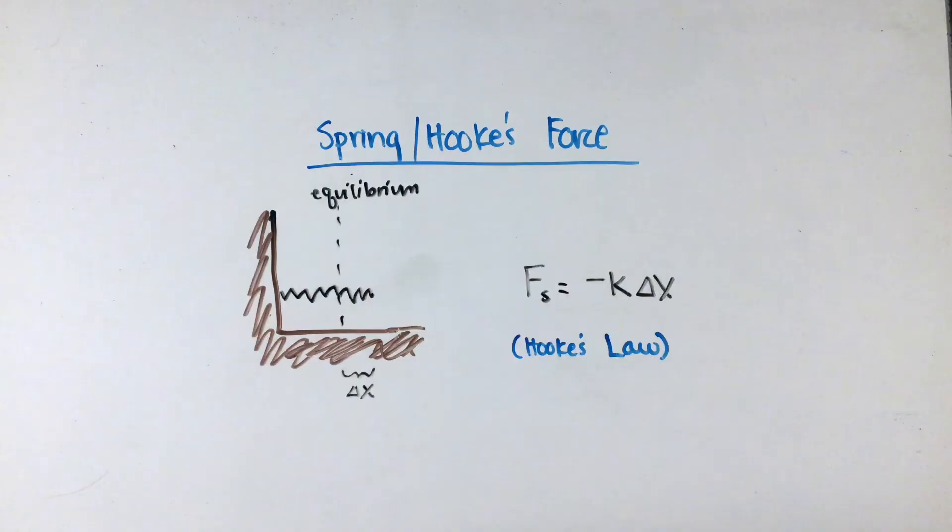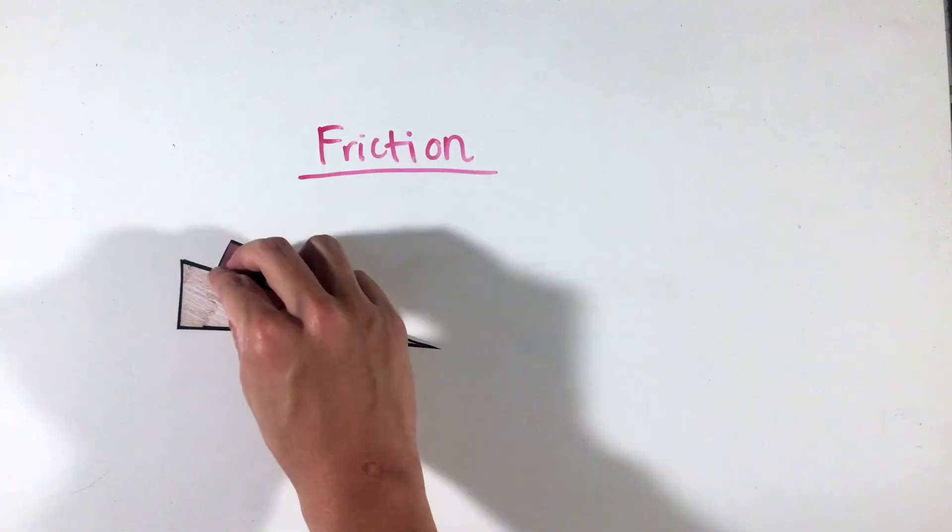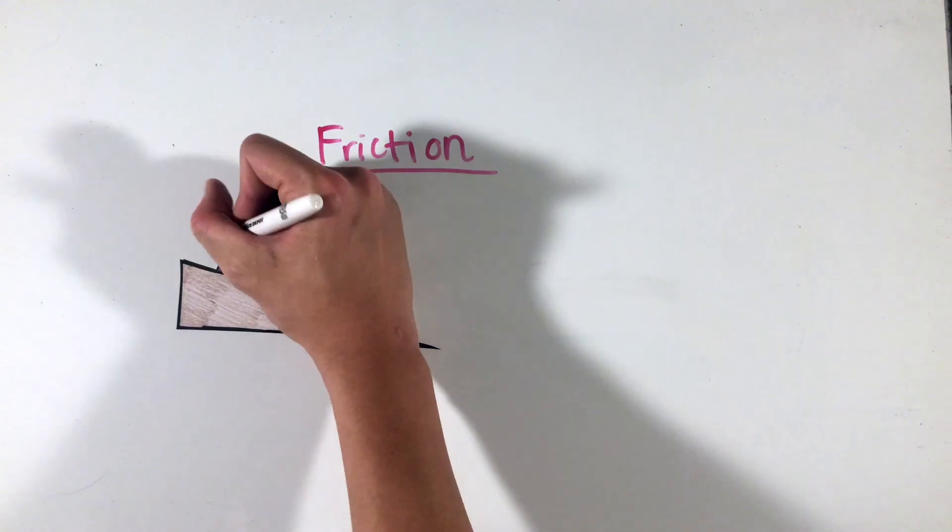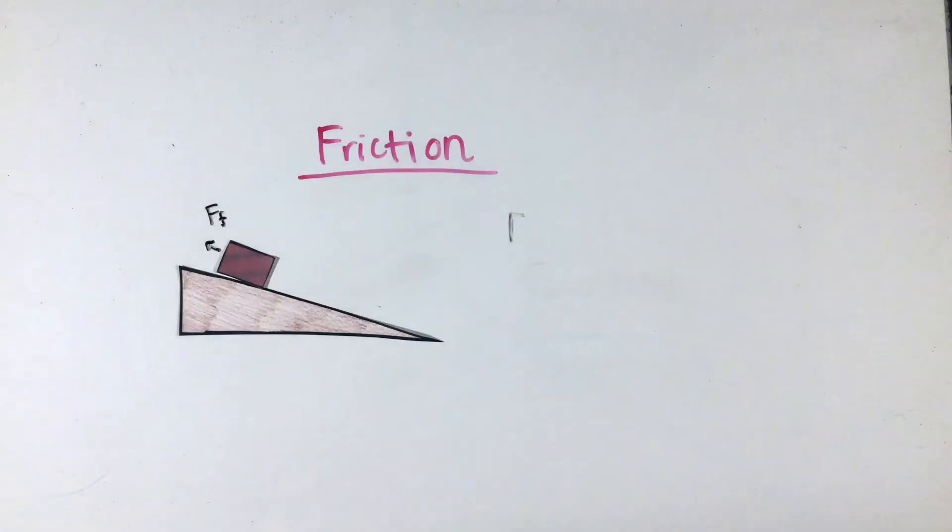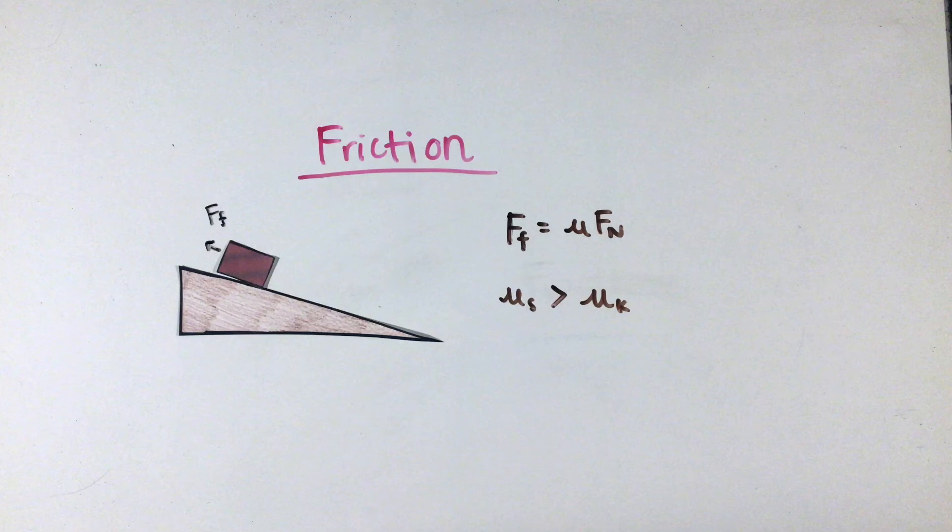Finally, one of the more complicated forces is friction. Friction, like our background knowledge would tell us, is the sort of rubbing resistance against surfaces objects feel, and always acts parallel to the surface in a direction opposite of the object's velocity or direction of motion. The equation for this force is the normal force from before times a quantity known as the coefficient of friction, denoted nu.